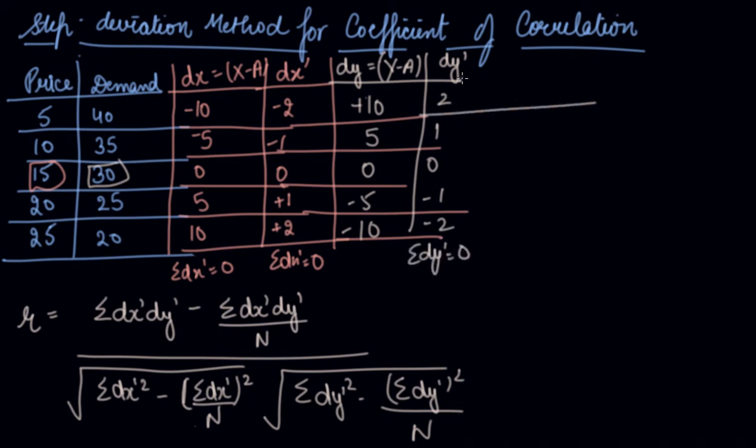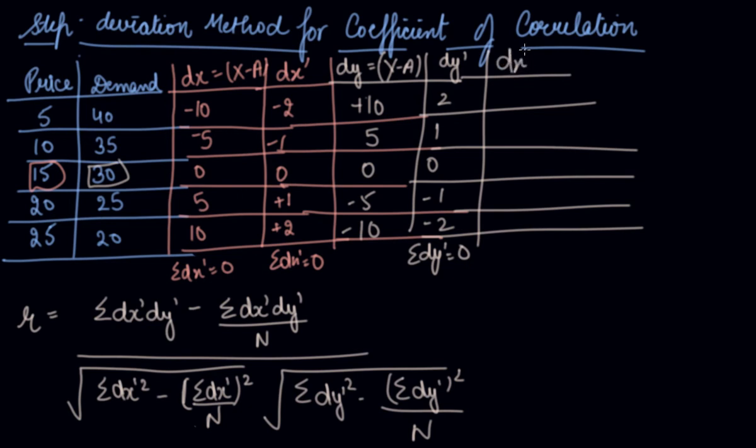Now we will find out the square. dx' square, dy' square. dx' dash square 4, 1, 0, 1, 4. We add it on this we get as 10. Same way dy' dash square is dy' dash is 2, 1, 4, 4, 1, 0, 1, 4. dy' dash square is 10 again.